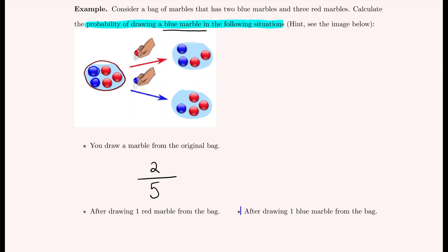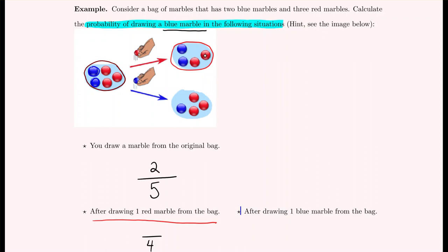Next, what is the probability of drawing a blue marble after we've drawn one red marble from the bag? We took out one of the red marbles, so now the bag has four marbles: two blues and two reds. Since one marble has been removed, our total is now four, but there are still two blue marbles present, so the number of ways we could select a blue marble is still two.